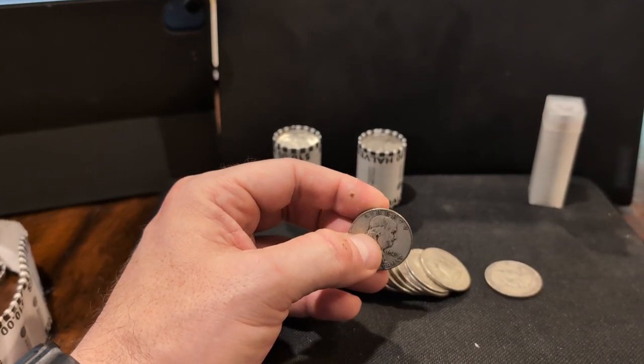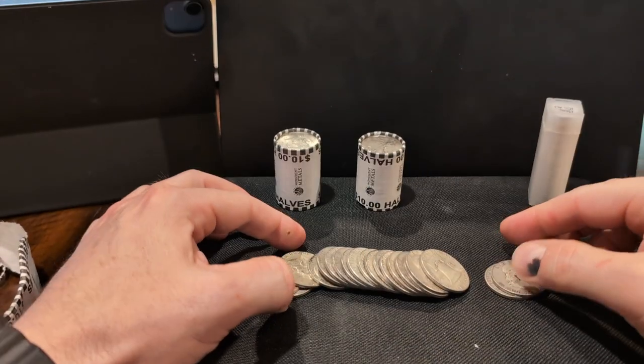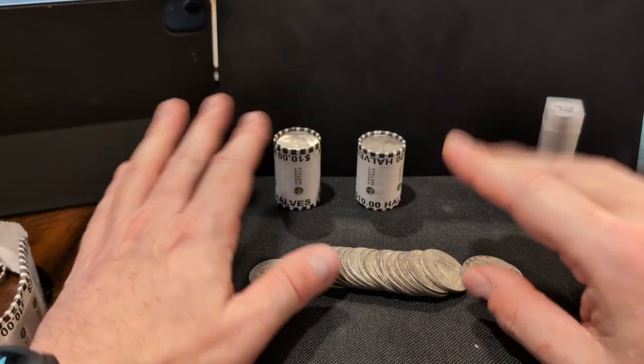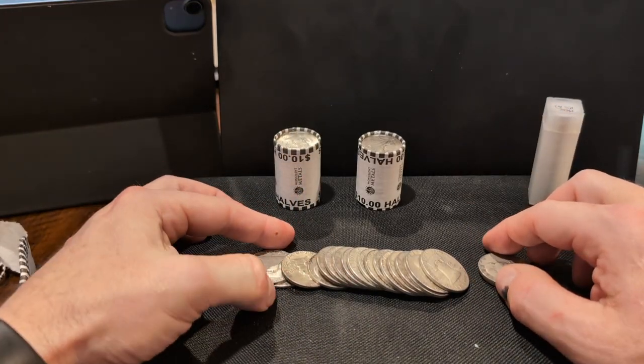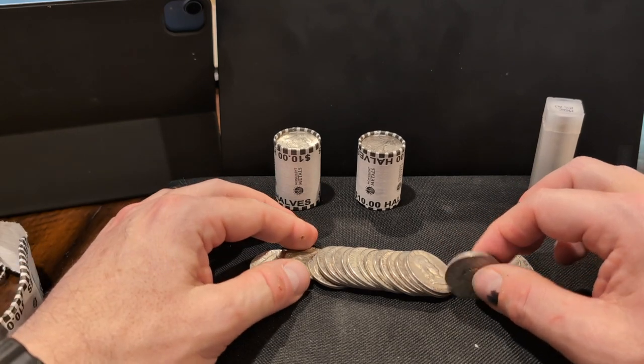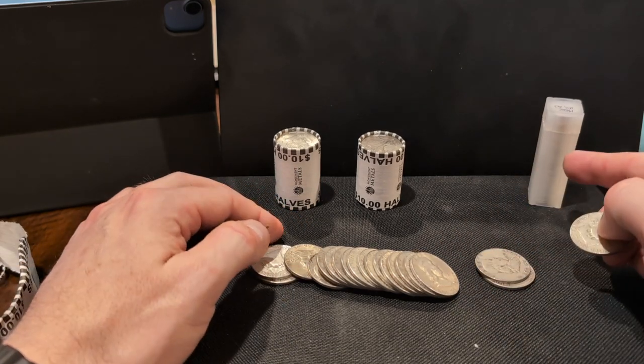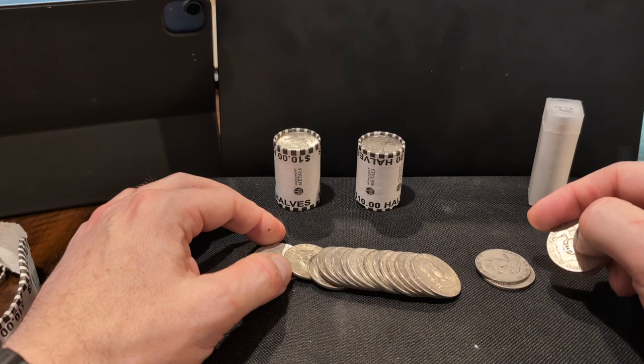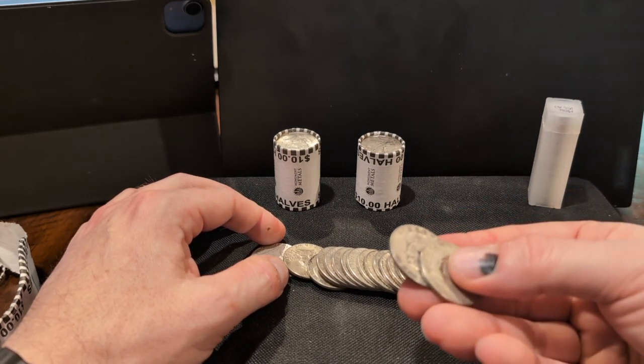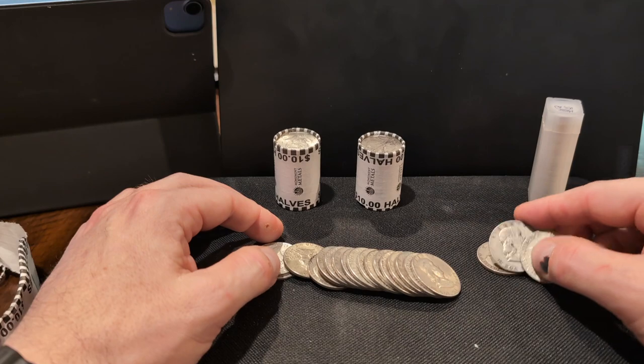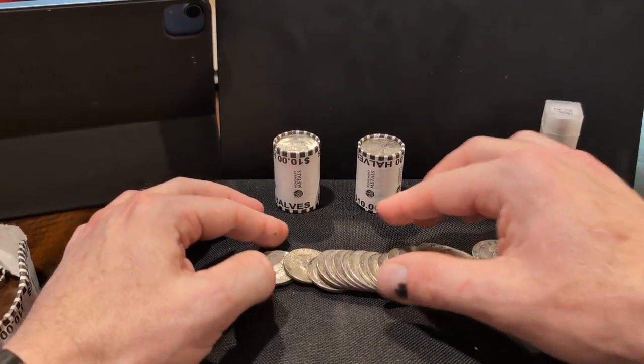Nonetheless, I thought what I learned was pretty interesting: that any combination of these types of coins that add up to a dollar is the same weight in silver. So, for example, 10 of those dimes is .715 ounces of silver, two of these is .715 ounces of silver, and on and on, which I thought was pretty interesting.